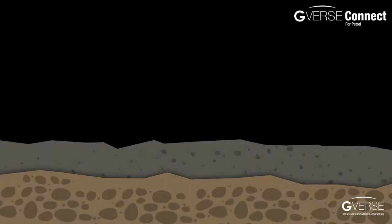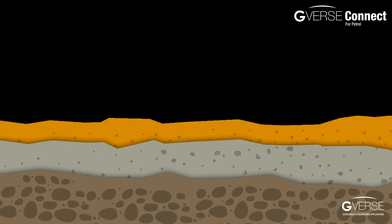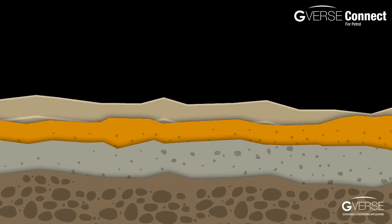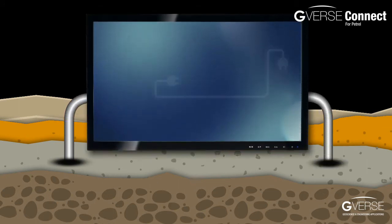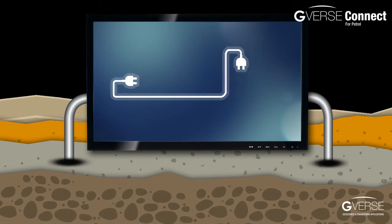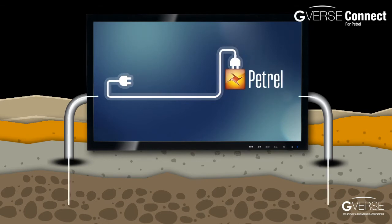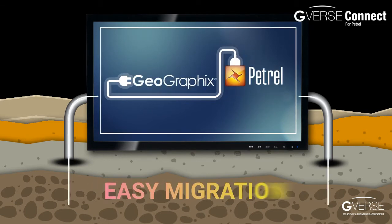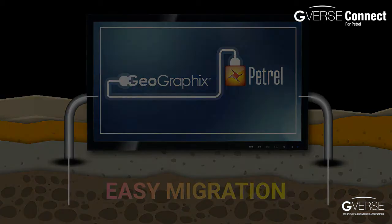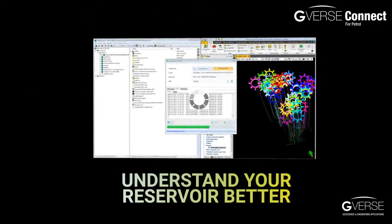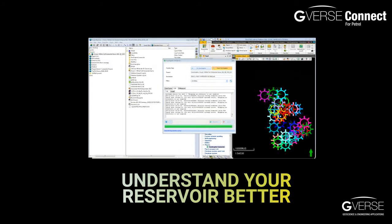With G-verse Connect, seamlessly integrate well, seismic, and maps to increase efficiency in an integrated interpretation environment. G-verse Connect enables fast database-to-database exchange for efficient and optimized reservoir characterization, leveraging strengths of two leading E&P technologies with a choice to use the right tool for the right job.